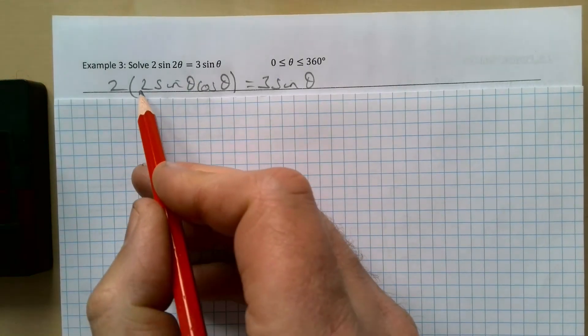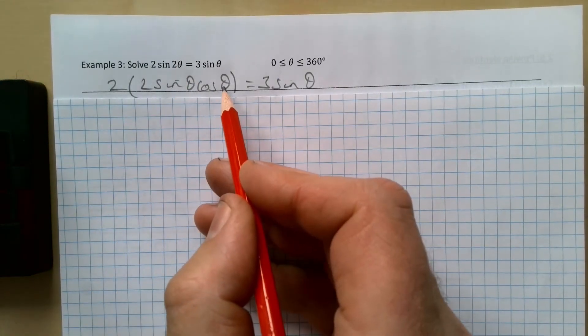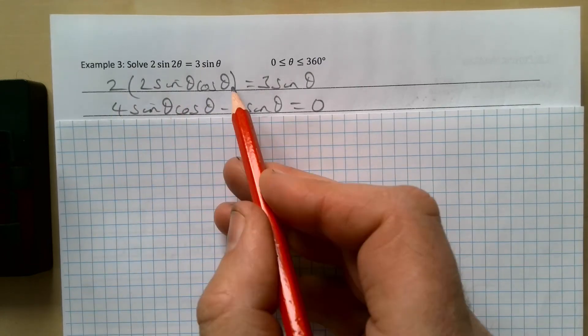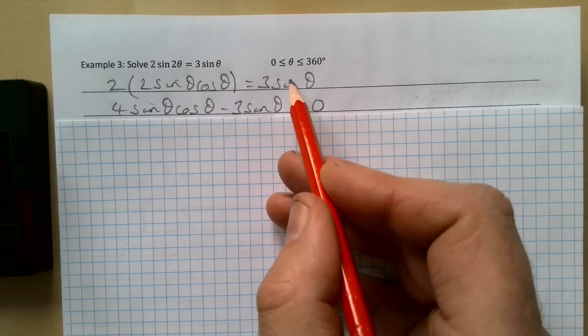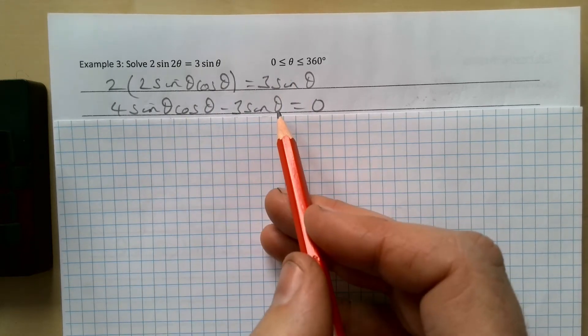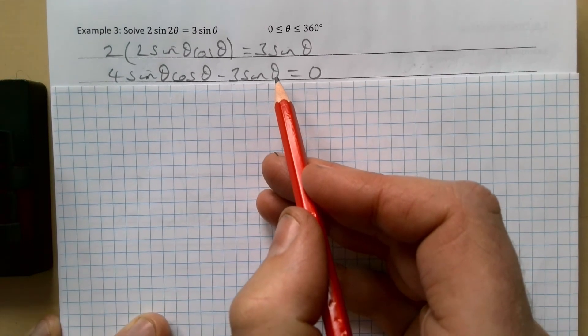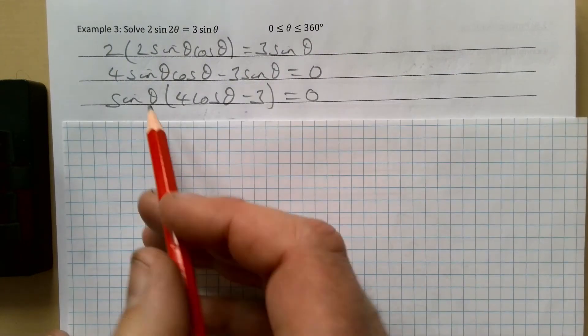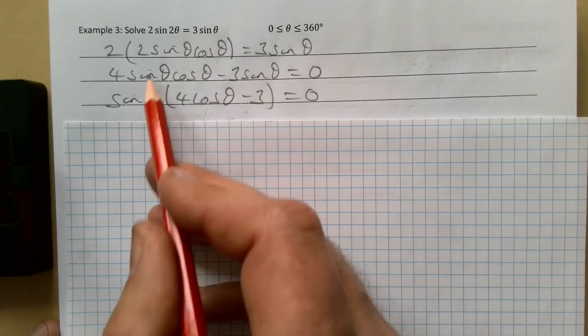I've changed my sine 2θ to 2 sin θ cos θ = 3 sin θ. I've then multiplied out my bracket giving me 4 sin θ cos θ, and taking the 3 sin θ over the other side. Some people might be tempted here to divide through by sine θ, but you can't do that without losing some solutions because you're losing the ones where sine θ equals zero. So factorizing out the sine θ we end up with this.